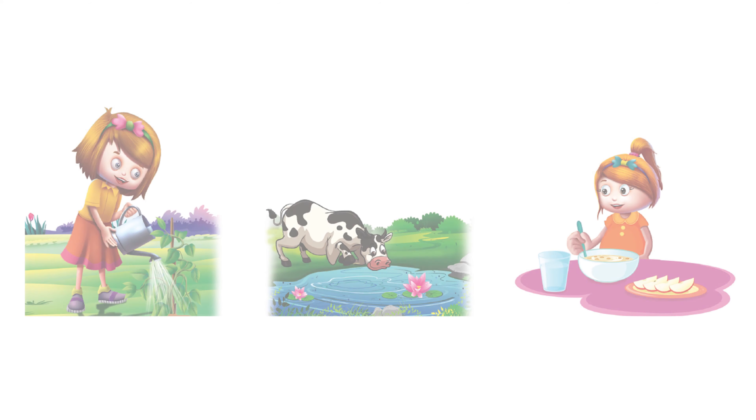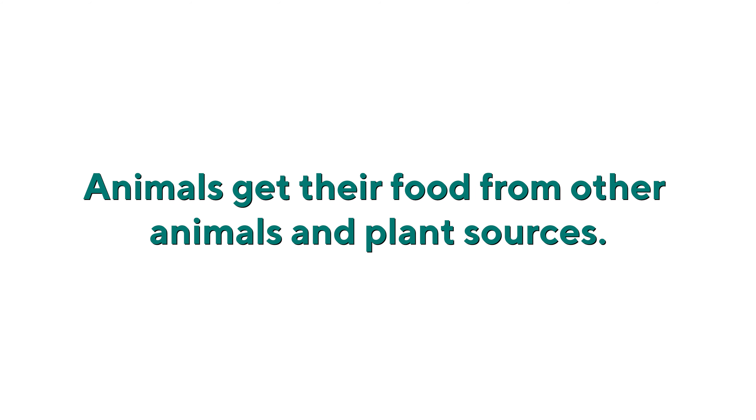The next characteristic is that living beings eat — they need food and water. Human beings get food from plant sources and animal sources. What about plants? Plants prepare their own food with the help of sunlight and nutrients from the soil, and that is called photosynthesis. That's how we also get yummy food to eat!